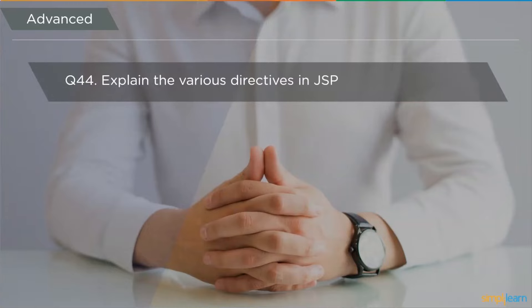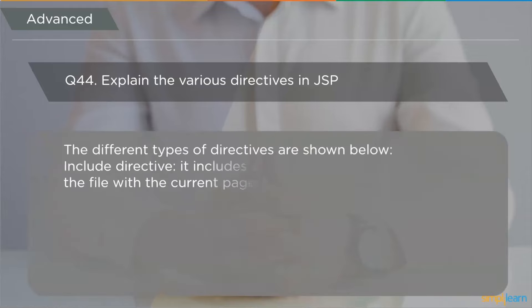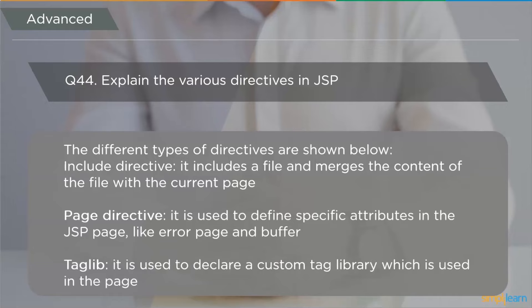The next question is: explain the various directives of JSP. Directives are instructions processed by the JSP engine after the JSP page is compiled into a servlet. They are used to set page-level instructions, insert data from external files, and specify custom tag libraries. There are three types: include directive (includes a file and merges its content with the current page), page directive (defines specific attributes like error page and buffer), and taglib directive (declares a custom tag library used in the JSP page).